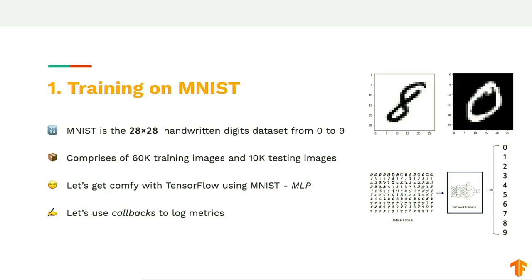To get comfortable with the TensorFlow syntax and TFDS API, we'll be training on the MNIST dataset. MNIST is a 28 by 28 pixel, hand-drawn digit dataset with digits from 0 to 9. Both examples you can see are 28 by 28 pixels — that's an 8 and that's a 0. They're grayscale images, so you can flip the color map to show the digit in black on white or vice versa. We're going to take this entire MNIST dataset, build a simple neural network, and classify hand-drawn digits.